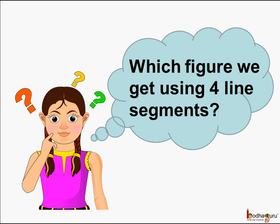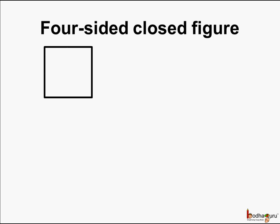Now you might think which figure we get using four line segments. This is a square which is a four-sided closed figure. And as you know this is a rectangle. This is also a four-sided closed figure.